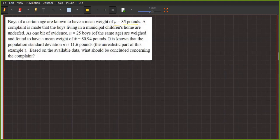We have to understand that it is underfed. Underfed is a big issue. As one bit of evidence, if n equals 25 boys, this is the sample size. Our weight is found to have a mean weight of 80.94 pounds. It is known that the population standard deviation is 11.6 pounds.